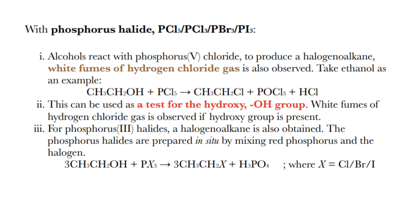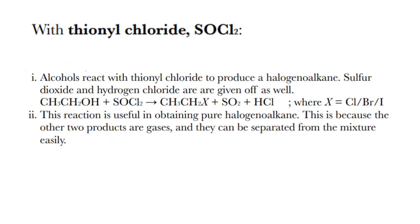For phosphorus trihalides, a halogenoalkane is also obtained. The phosphorus halides are prepared in situ by mixing red phosphorus and the halogen. Alcohol plus PX3 gives haloalkane plus H3PO3, where X can be chlorine, bromine, or iodine. With thionyl chloride, SOCl2, alcohols react to produce a halogenoalkane. Sulfur dioxide and hydrogen chloride are given off as well. Ethanol plus SOCl2 gives haloalkane plus SO2 and HCl. This reaction is useful for obtaining pure halogenoalkane, as the other two products are gases and can be separated from the mixture easily.